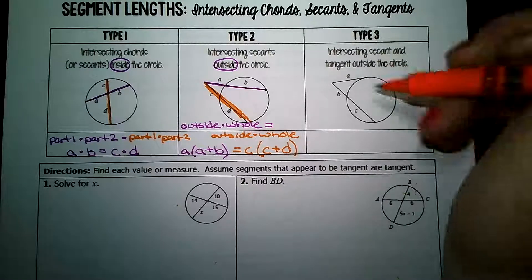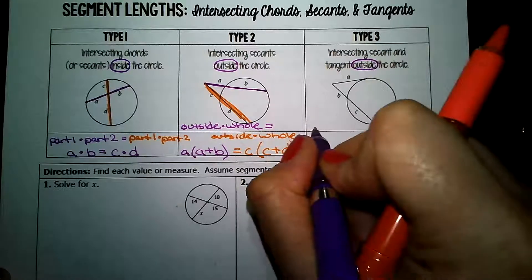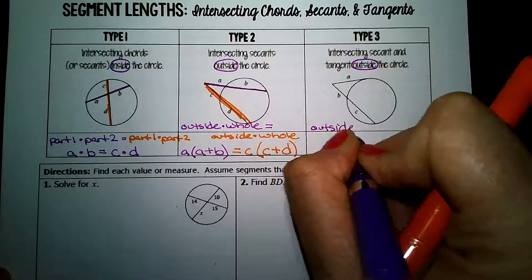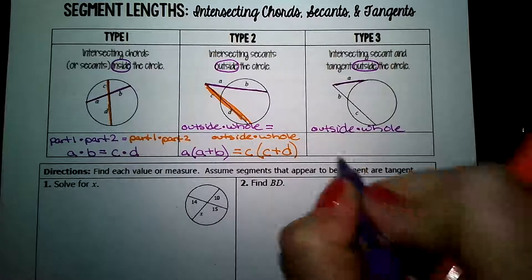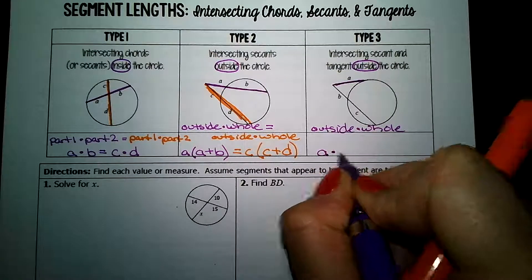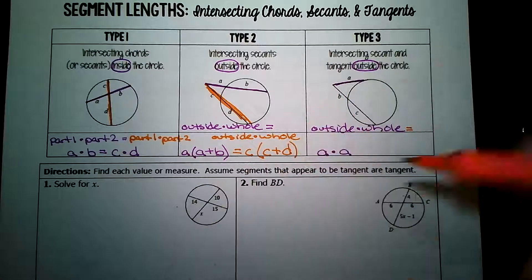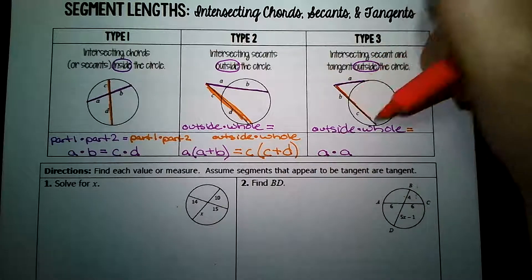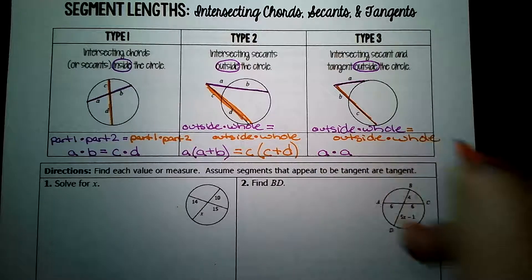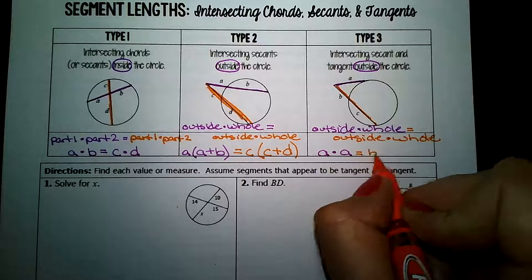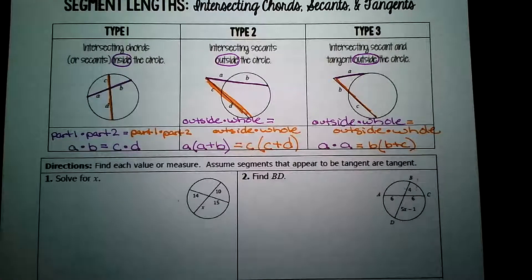If you have a tangent, this intersection is outside again, so let's keep the same pattern, but watch how it changes. If we go outside times whole for the top, well, that outside number is a, and the whole number is a. So that's a squared, a times a. The second figure here is a secant line, and that would also be outside times whole. Whatever we do on one side, we do on the other side. So that outside value is b, and the whole thing is the sum of b plus c.